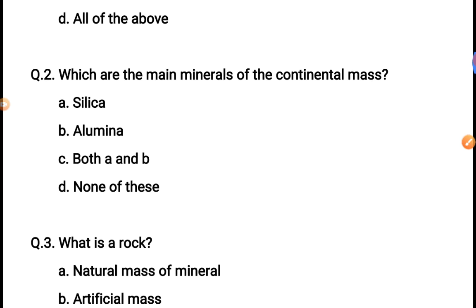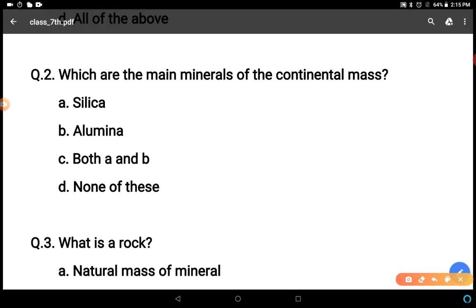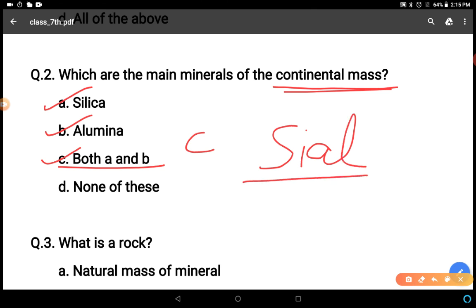Come to the next question: which are the main minerals of the continental mass? Two types of masses - continental mass and oceanic masses. Options: silica, alumina, both A and B, none of these. The answer is C, both silica and alumina, so it is known as Sial. We discussed this in the chapter.